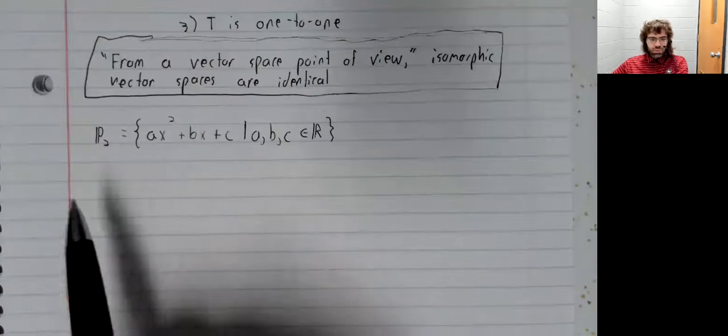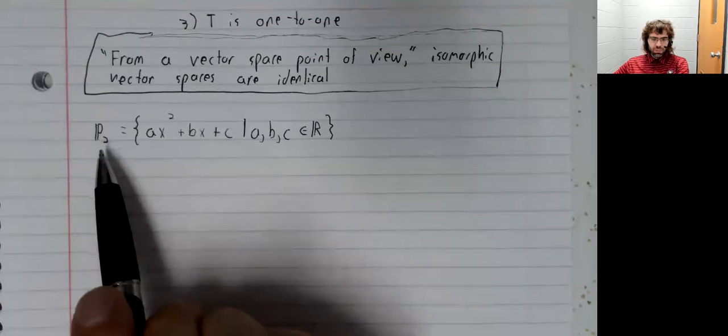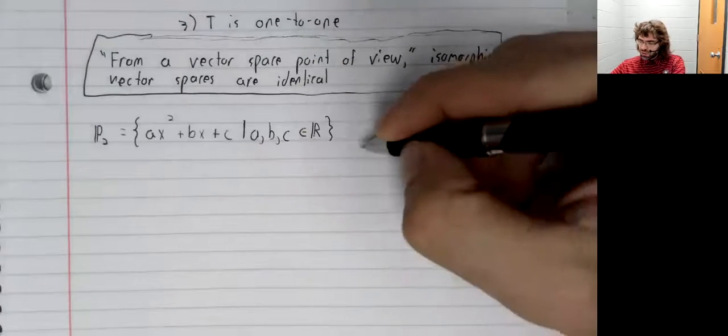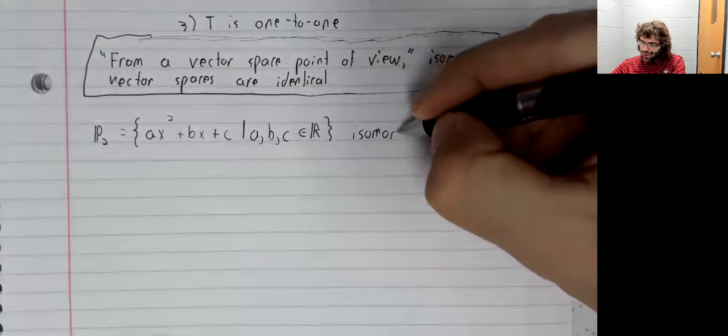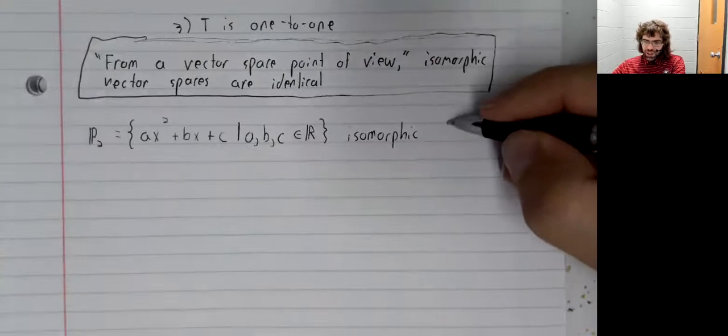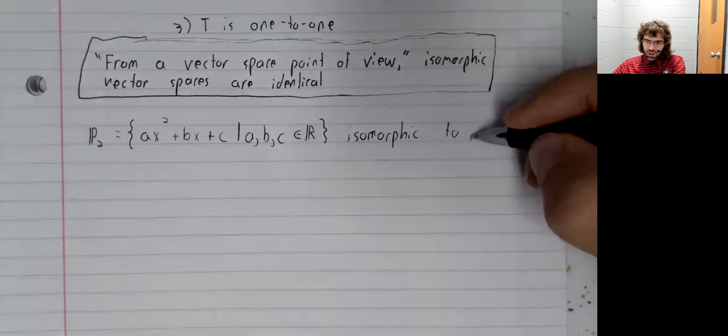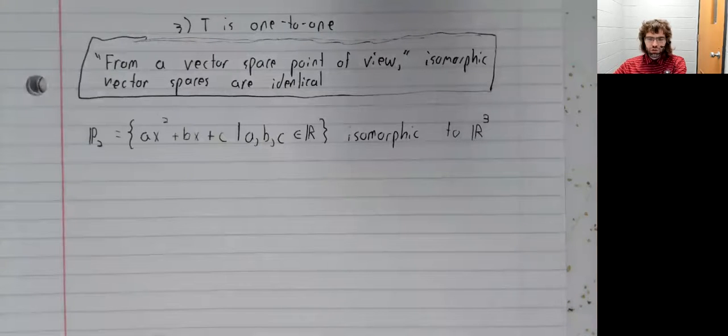We won't prove that this is an isomorphism, at least at the moment, but this is isomorphic to R³. And our notation for that is an equal symbol with a squiggle over it.